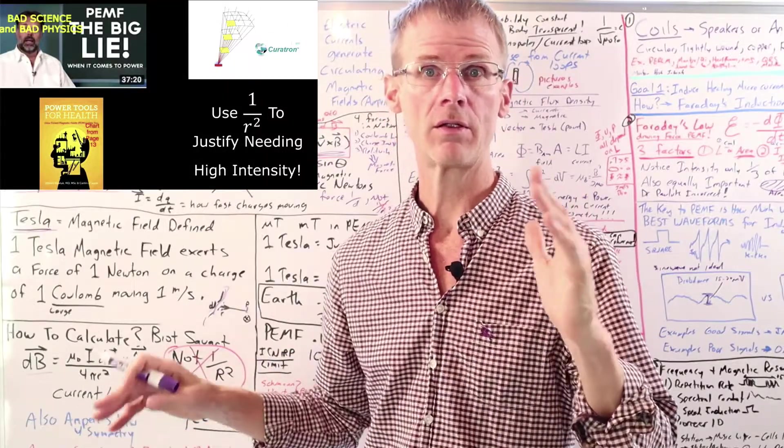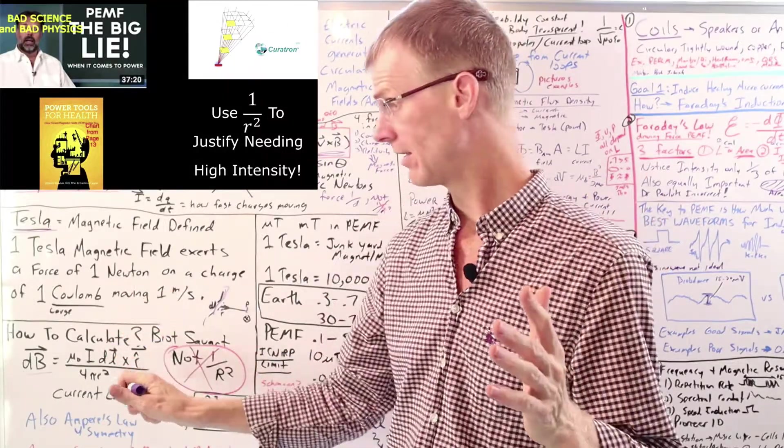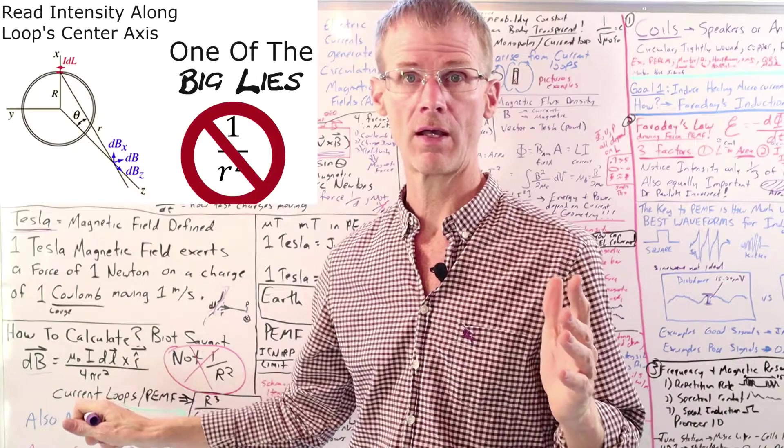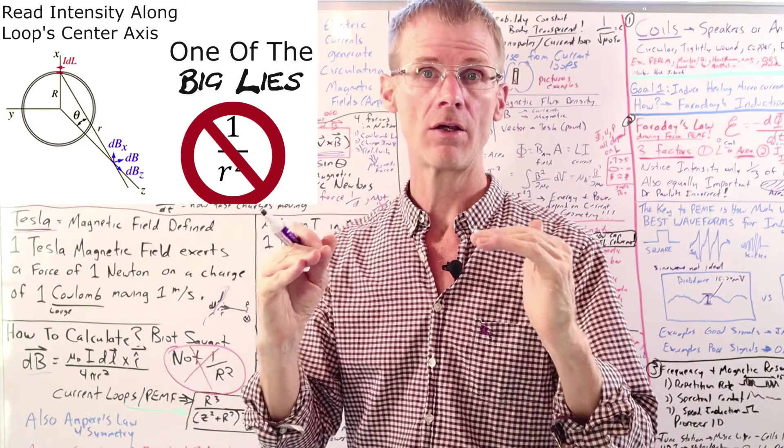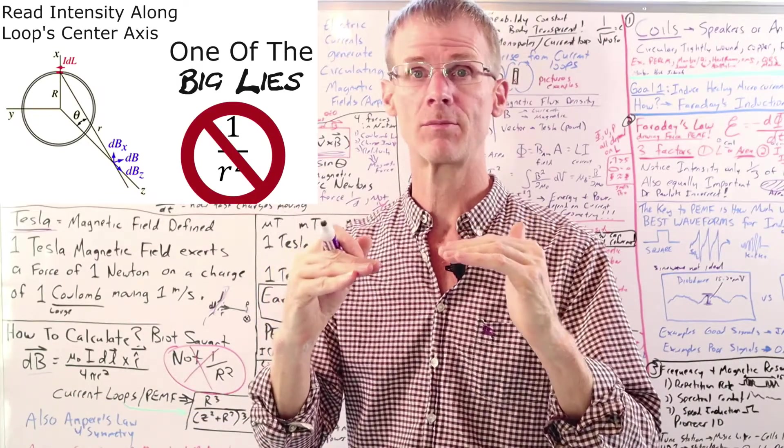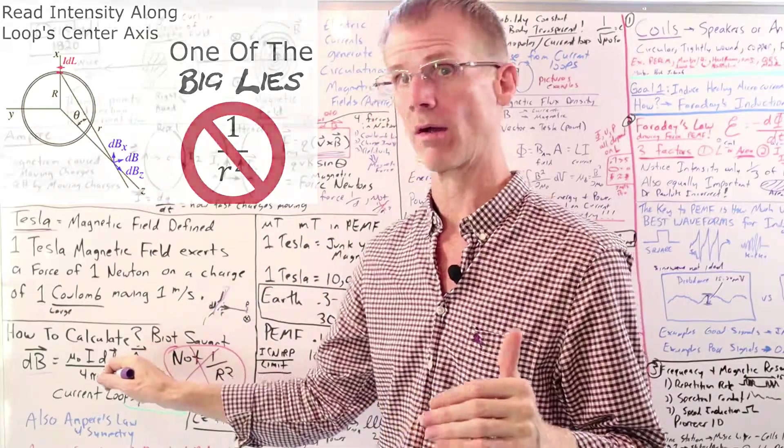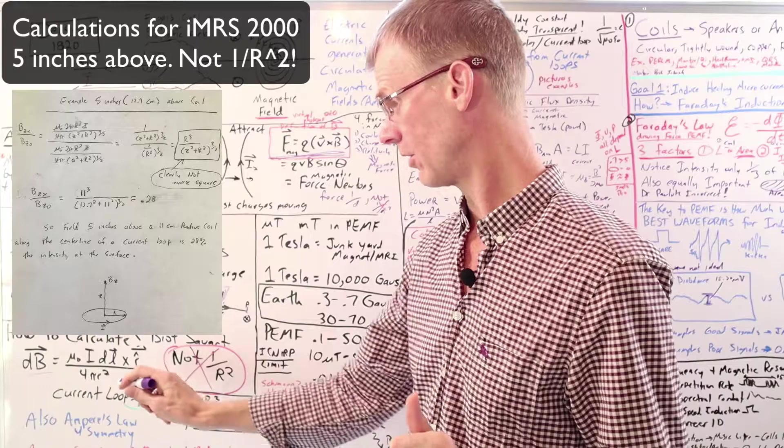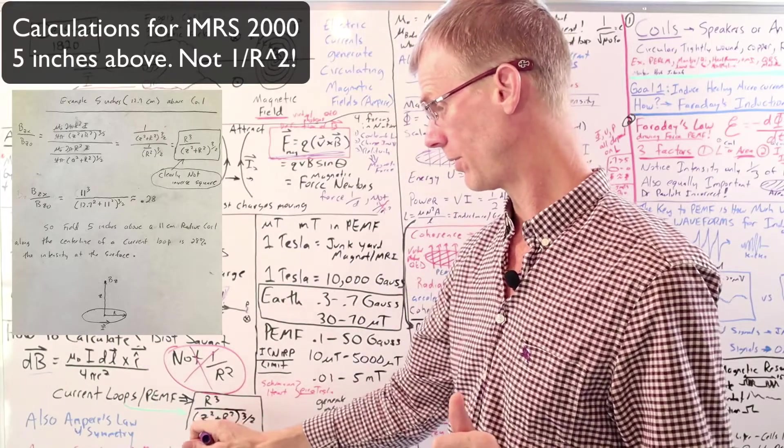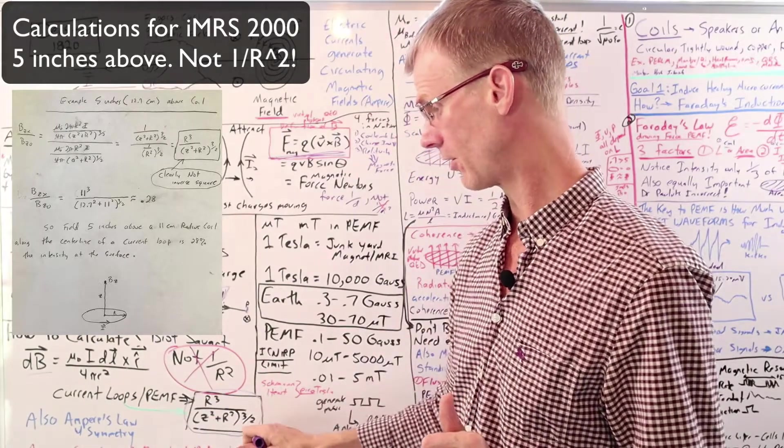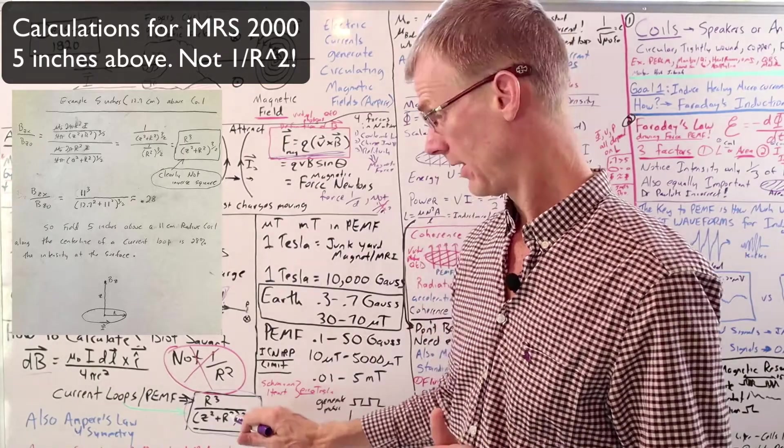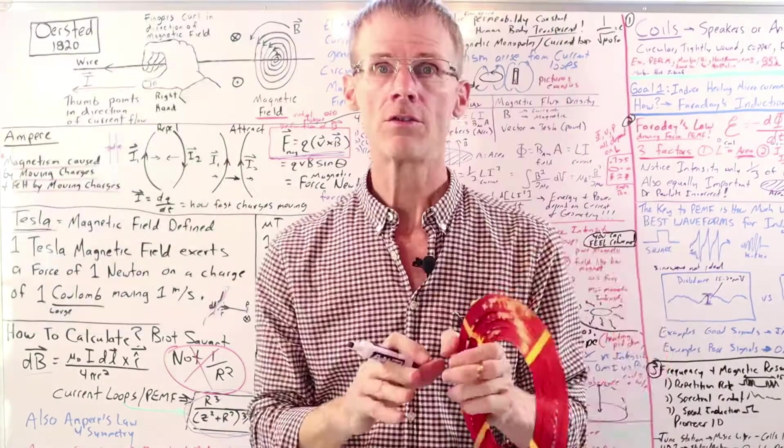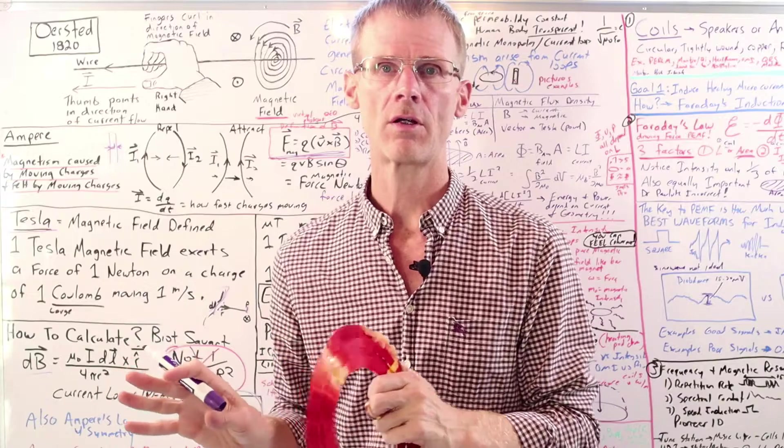Dr. Pawluk, Marcus Freudenmann, Curatron, and some other companies say that it's an inverse square law in that you need more power or a higher intensity because low intensity systems won't penetrate because of the inverse square. Well, they're using the inverse square incorrectly. It turns out that when you integrate, let's say, over a current loop using the Biot-Savart law, you get this little equation here for the percent drop off. And this is most certainly not a one over R squared.